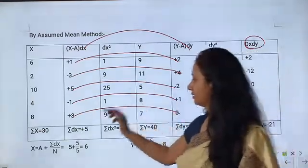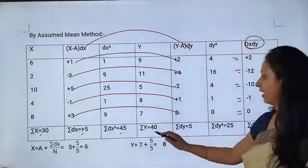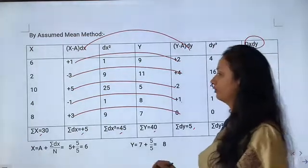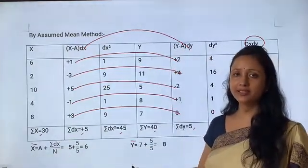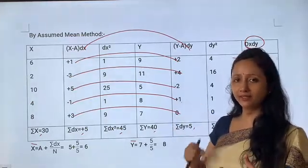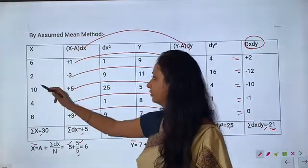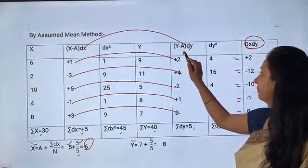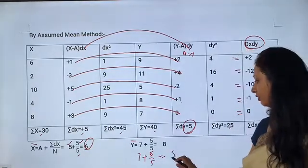Now we will sum all the columns: Σx=30, Σdx=+5, Σdx²=45, Σy=40, Σdy=5, Σdy²=25, Σdx·dy=−21. Now calculate x̄ and ȳ. In the assumed mean method: x̄ = a + Σdx/n = 5 + 5/5 = 6. ȳ = a + Σdy/n = 7 + 5/5 = 8.